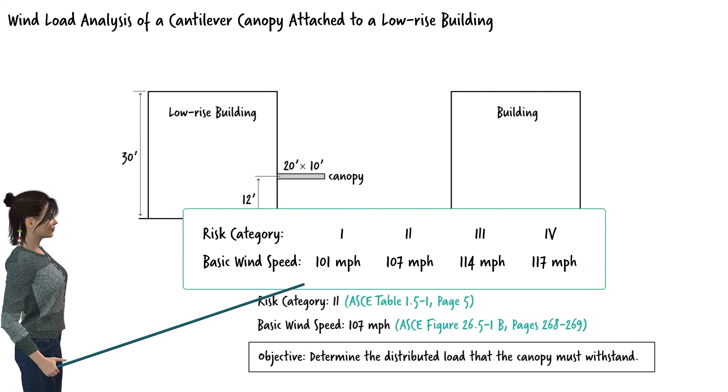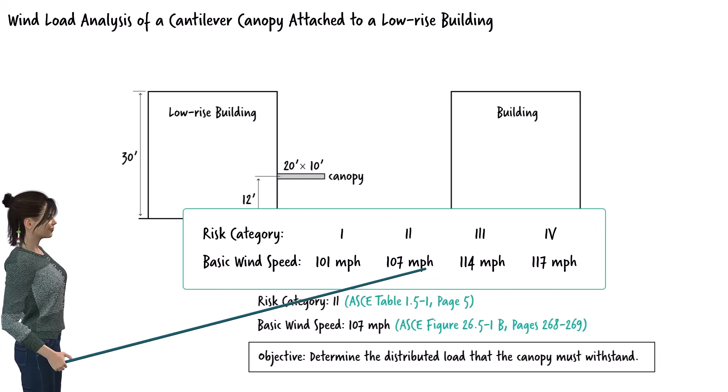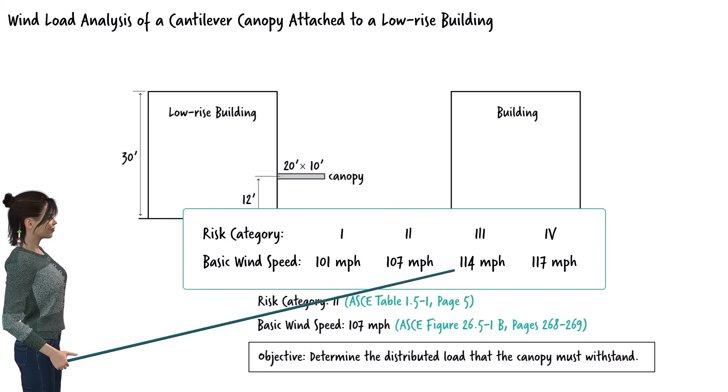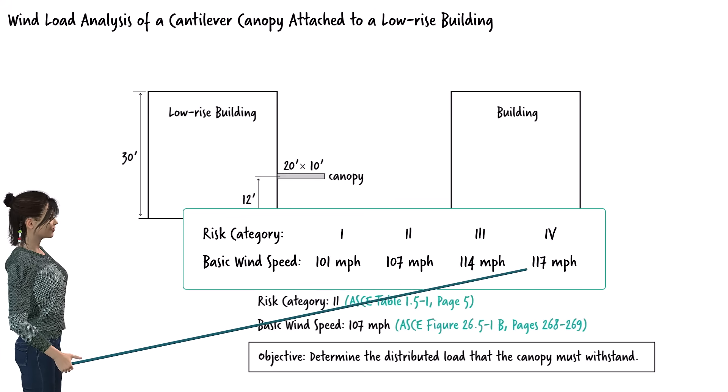As a category 3 structure, we would use a basic wind speed of 114 mph. If the canopy were in category 4, the basic wind speed would be 117 mph.